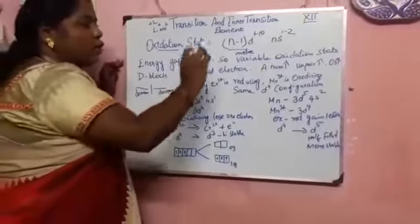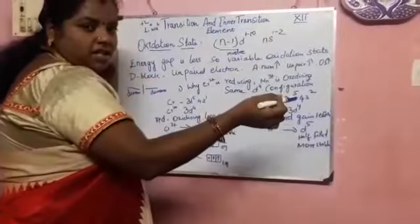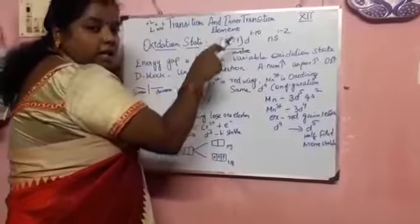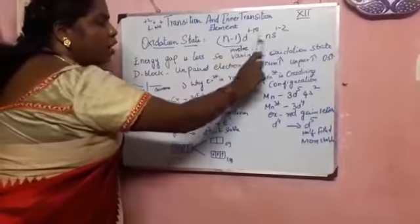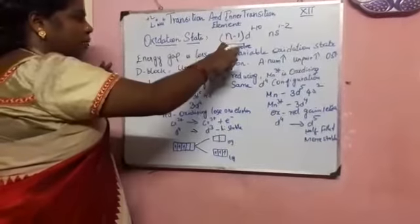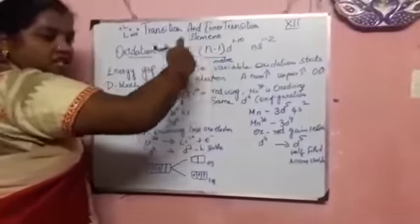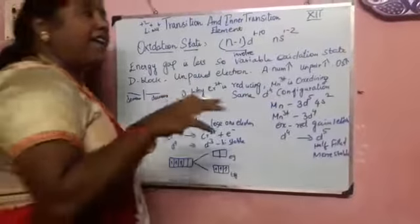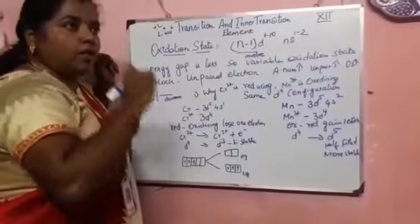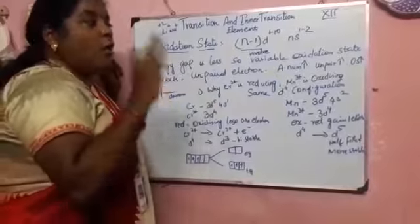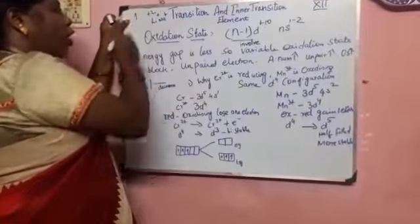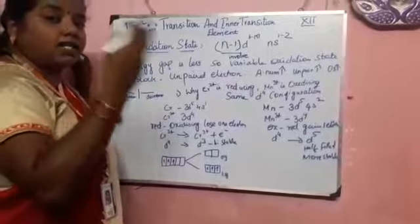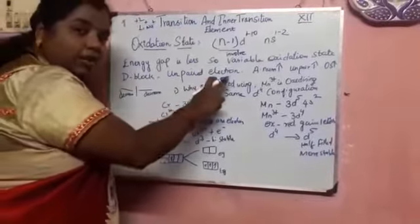Why do transition elements show variable oxidation states? Usually only the outermost electrons are involved in oxidation state. But in transition elements, the (n-1)d¹⁻¹⁰ electrons are also involved because the energy gap between the D-block and S-block orbitals is very small. Also, in the D-block, unpaired electrons are present. Paired electrons are not readily available to form oxidation states, but unpaired electrons — represented by a single-headed arrow — easily accept or bond with other atoms.